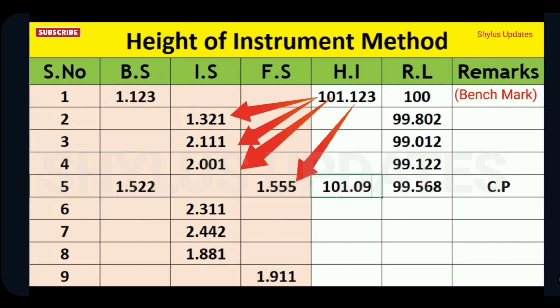Next, to find reduced level, same procedure is continued. Subtract intermediate site from HI. Subtract fore site from HI. That's it.